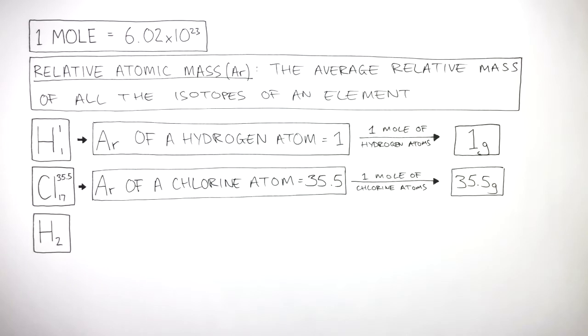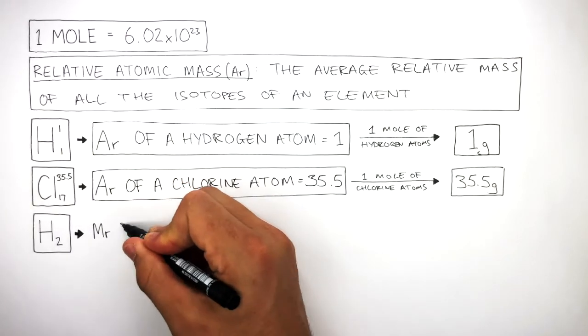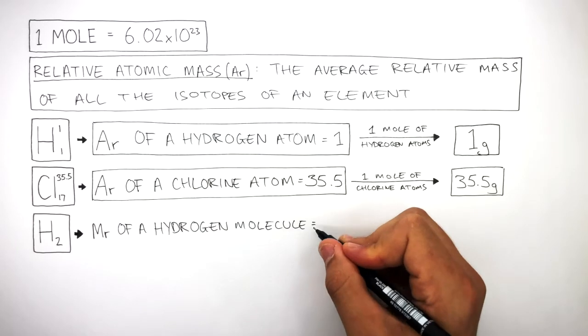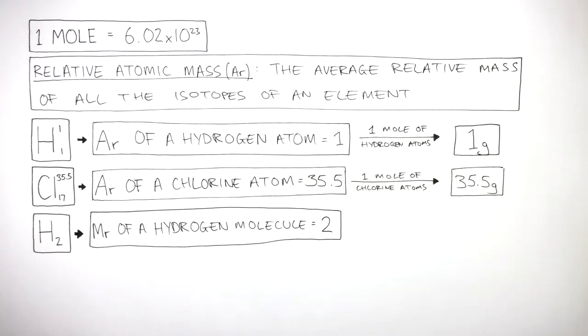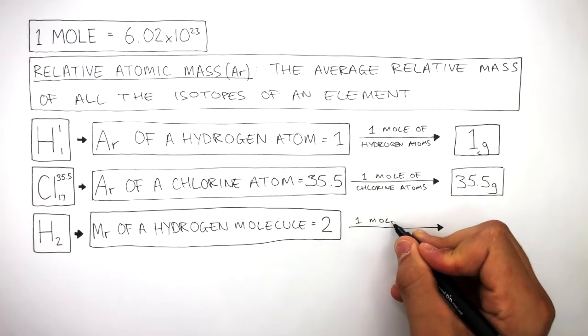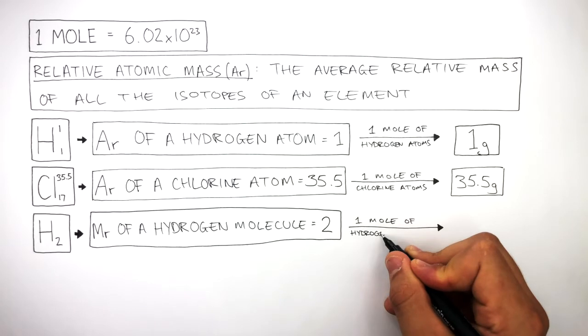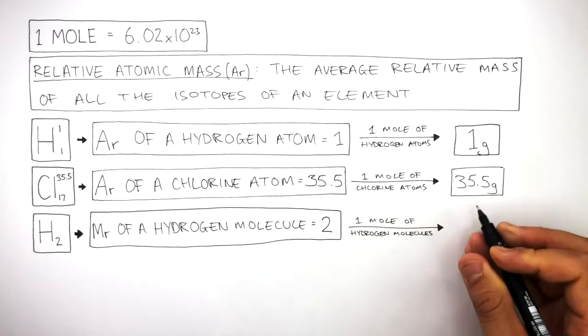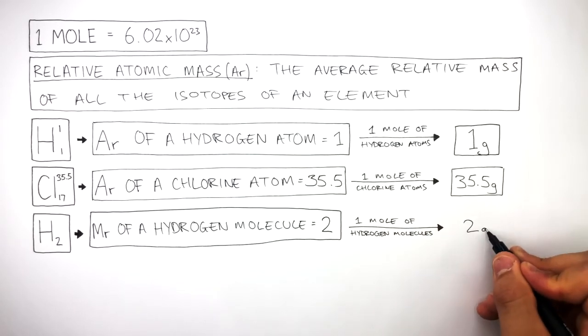H2 is a hydrogen molecule, and the MR of a hydrogen molecule is 2. To convert the MR into mass, one mole of hydrogen molecules is 2 grams.